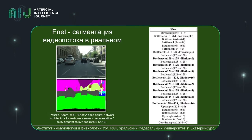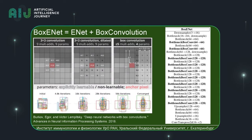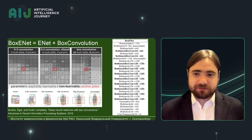We also tried ENET architecture, which is a popular approach used to process video streams — it can quickly segment objects almost in real time. The special feature is that the architecture uses narrow blocks where the input of the block is summed with its output, so the neural network measures the delta instead of converting the image completely with full loss of information. We also took the ENET architecture and added box convolution, based on Skolkovo research, just to see the result.